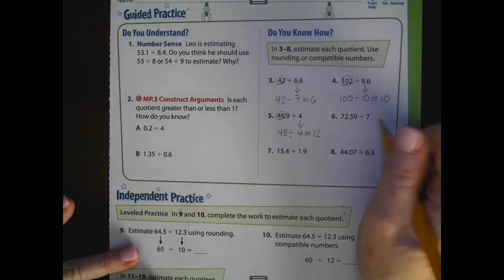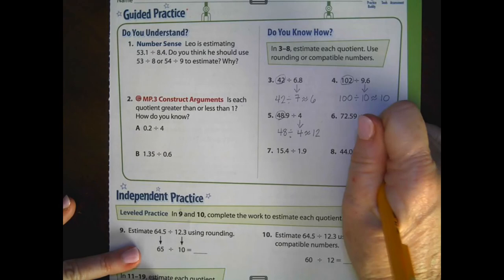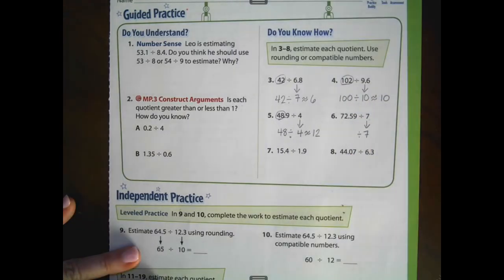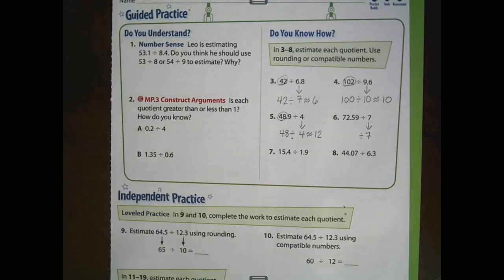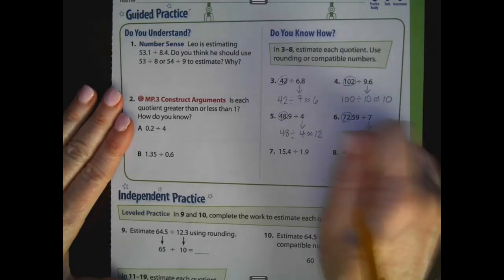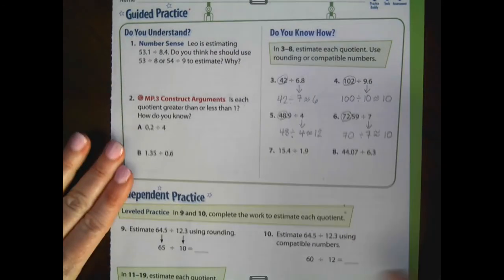Number 6. Again, it's very much like number 5. The divisor is a whole number. I know my 7 facts. So I'm going to leave it 7. A number very close to 72 that is divisible by 7 is 70. So 70 divided by 7 gives me an estimated quotient of 10.